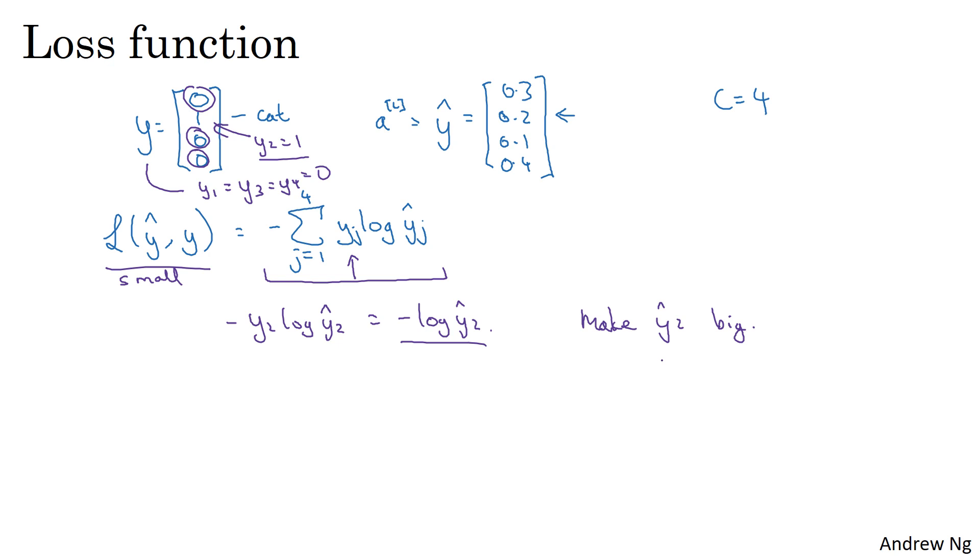And these are probabilities, so it can never be bigger than 1. But this kind of makes sense, because if x for this example is a picture of a cat, then you want that output probability to be as big as possible. So more generally, what this loss function does is it looks at whatever is the ground truth class in your training set, and it tries to make the corresponding probability of that class as high as possible. If you're familiar with maximum likelihood estimation in statistics, this turns out to be a form of maximum likelihood estimation. But if you don't know what that means, don't worry about it. The intuition we just talked about will suffice.